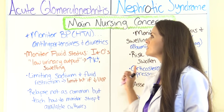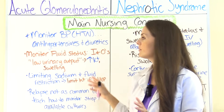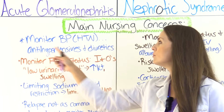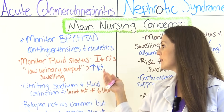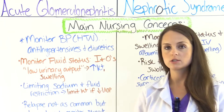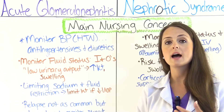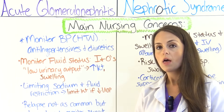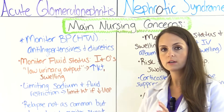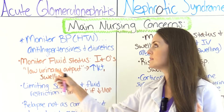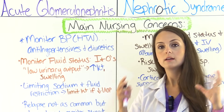Now let's look at the main nursing concerns for each condition. For acute glomerulonephritis, the patient can have hypertension, so we want to monitor blood pressure. The physician may prescribe anti-hypertensive drugs or diuretics, depending on whether their renal status is sufficient since diuretics act on the nephrons. We also want to monitor fluid status closely — specifically I's and O's, especially urinary output. Normal output for a child is one milliliter per kilogram per hour, or at least 30 cc's per hour for an adult. A decreased GFR can progress to renal failure.